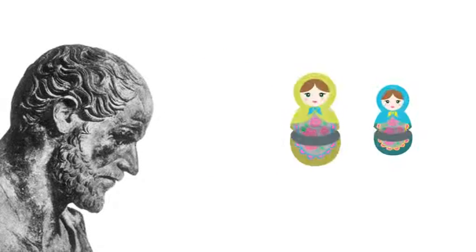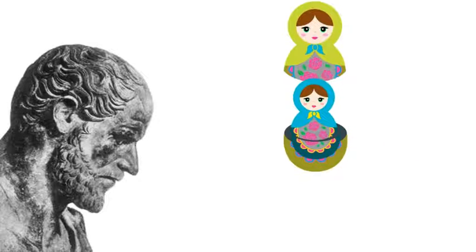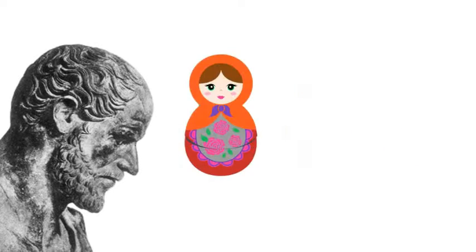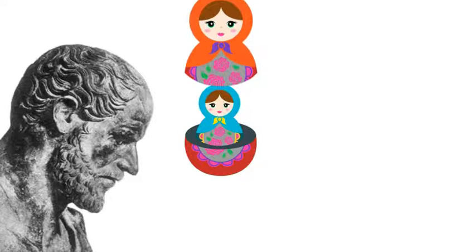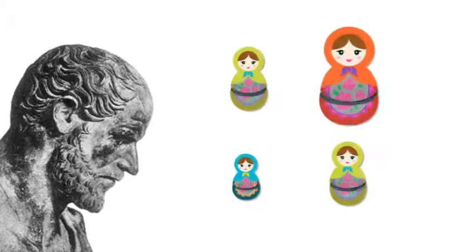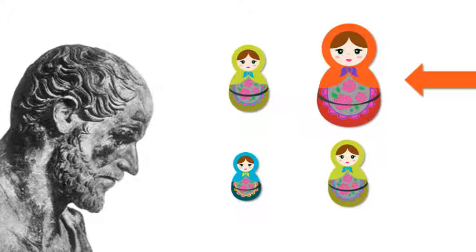Now, with that information, you know that if both the statements are true at the same time, then there must be a blue doll inside the red doll. Even though I never actually said that there was. This is because, according to Aristotle, you're able to determine the relationship between the red doll and the blue doll by mediating it through the relationship that they share with the green doll.